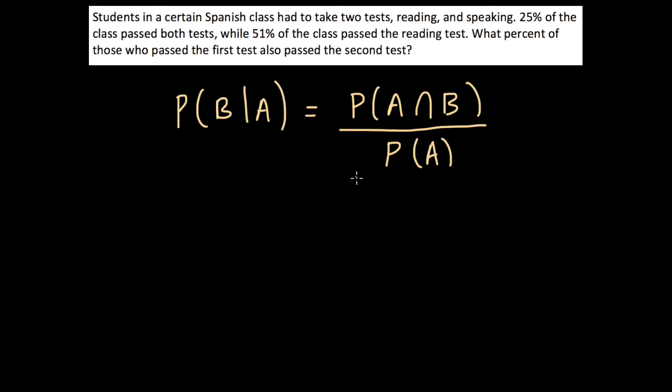So let's read the question again and try to figure out what exactly B and A would be. So our two events here are passing the first test and passing the second test. So here, if you read it carefully, it says, of those who passed the first test also passed the second test.